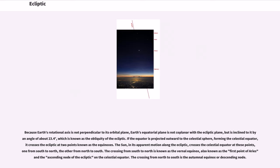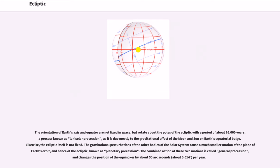The crossing from north to south is the autumnal equinox or descending node. The orientation of Earth's axis and equator are not fixed in space, but rotate about the poles of the ecliptic with a period of about 26,000 years, a process known as lunisolar precession, as it is due mostly to the gravitational effect of the Moon and Sun on Earth's equatorial bulge. Likewise, the ecliptic itself is not fixed. The gravitational perturbations of the other bodies of the solar system cause a much smaller motion of the plane of Earth's orbit, and hence of the ecliptic, known as planetary precession. The combined action of these two motions is called general precession and changes the position of the equinoxes by about 50 arcseconds, about 0.014 degrees, per year.